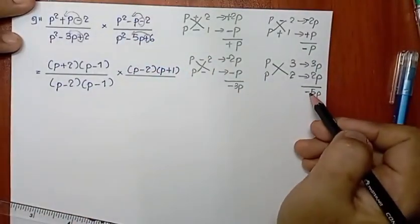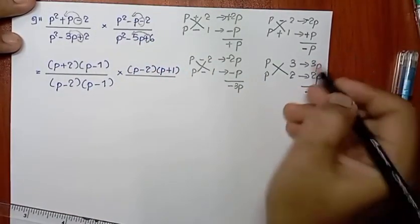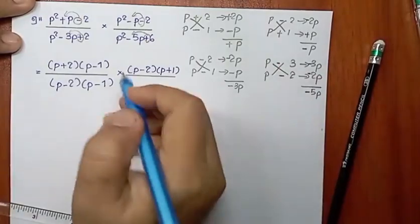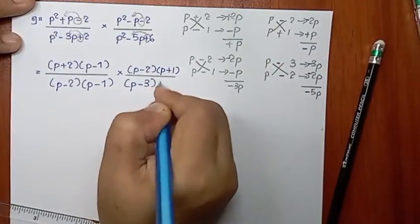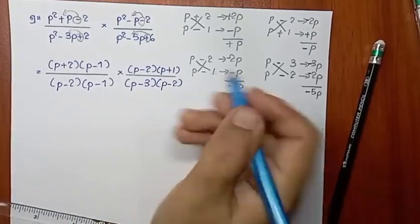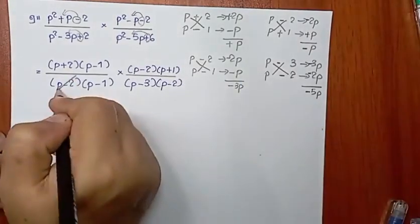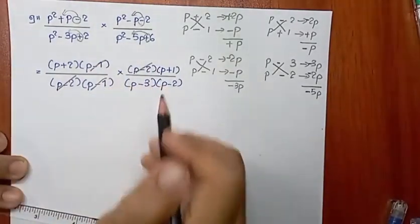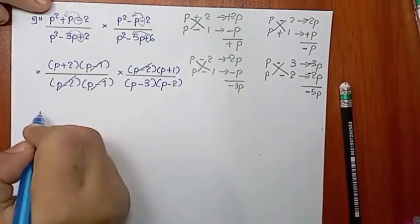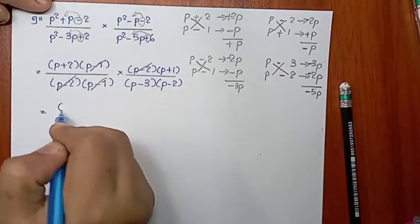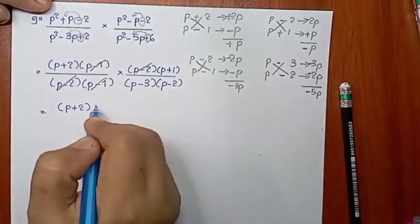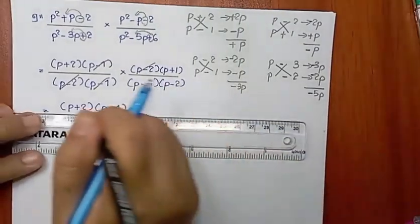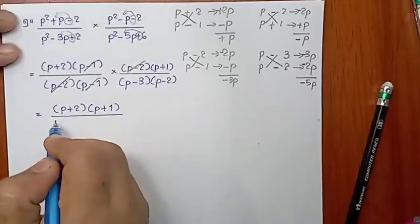Let's see the bottom here. So if you want to make a difference, you will be able to make a difference. So let's see: b minus 3, b minus 2. B minus 2, b minus 2, b minus 1, b minus 1, b minus 1, b minus 1, b minus 3, b minus 2, b minus 2.